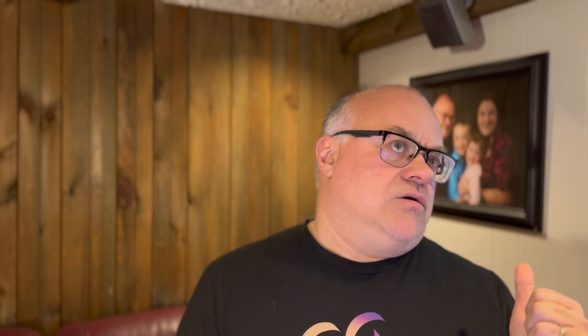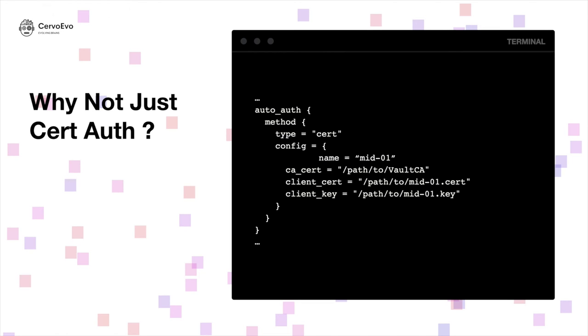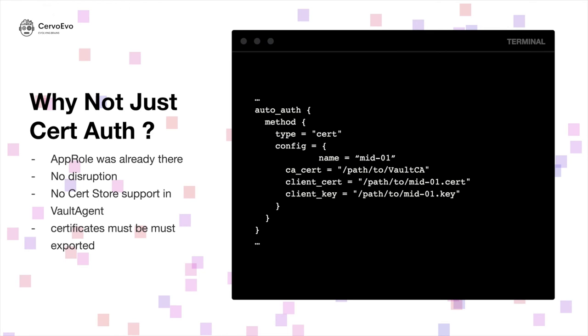We're getting a certificate to get a token, to get a secret ID, to get another token so we can read credentials — that's a lot of tokens. Can't we just do cert auth in the Vault agent? Well, yes, but for us we already had the app role set up. So we're not changing the process very much, just the way of generating the secret ID — from a script we run to a script the server runs. This will make the change almost transparent and also gives us a backup solution in case something breaks. Additionally, if we did use the Vault agent, we would still need a script to export the certificates from the certificate store because the Vault agent can't read them natively.